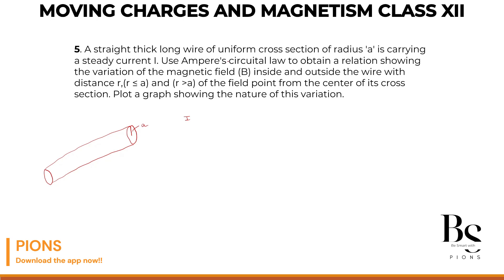Use Ampere's circuital law to obtain a relation showing the variation of magnetic field inside and outside the wire with distance R less than A, R greater than A, from the field point from the center of the cross-section. Now pay attention. This is very important because here we will use some core concepts.